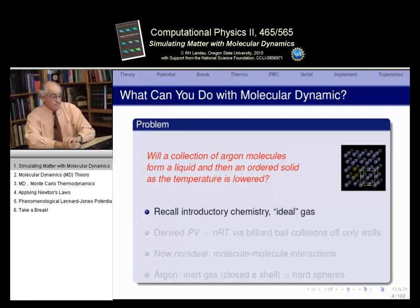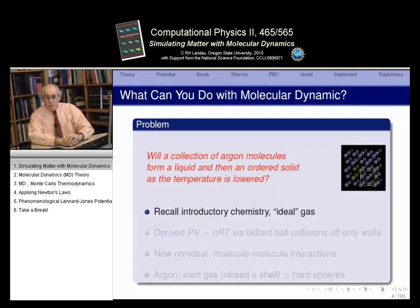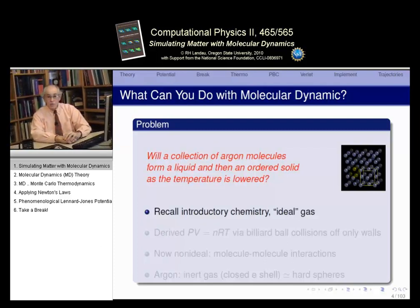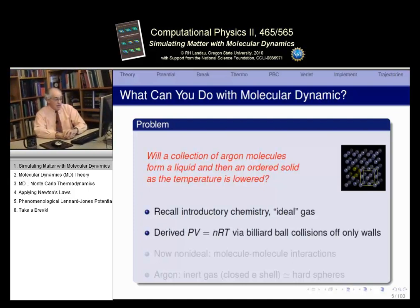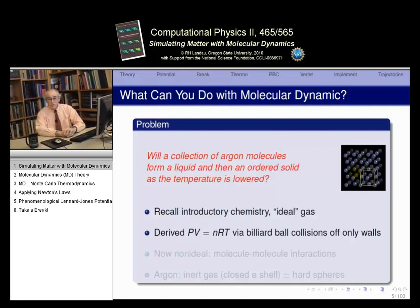Recall your introductory chemistry class and your study of an ideal gas. One of the things we did in introductory chemistry is we derived the ideal gas law, PV equals NRT, where P is the pressure, V is the volume, N is the number of moles, R is some constant, and T is the temperature. What's interesting is we derived this just as billiard balls bouncing off the walls of a container. There was no interaction between the particles, and that gave you the ideal gas law, which works very well.